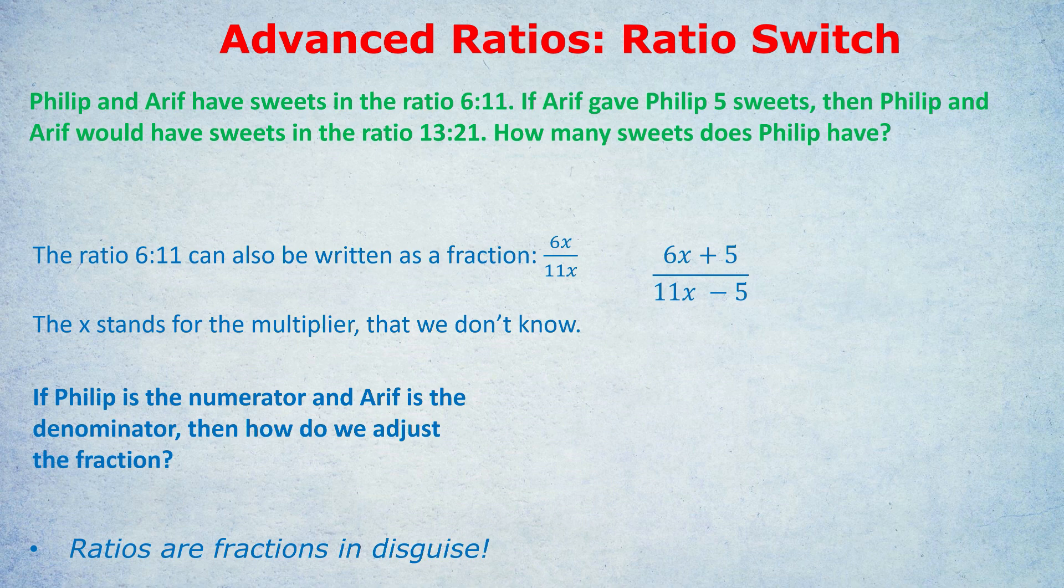We do it like this. We add 5 to the numerator, which is Philip, take away 5 to the denominator, which is Arif. This reflects the fact that Philip gained 5 sweets and Arif lost 5 sweets. So we write the fraction in a slightly changed way now. You could do this on a new line on your page. So far, hopefully it's making sense. I think I've sold you on the 6x over 11x thing, because we've changed the ratio into a fraction, and x stands for the multiplier that we don't know and we're trying to work out. And it makes sense that if Philip is the top line, and he gains 5 sweets, we add 5. And if Arif is the bottom line, he loses 5 sweets, so he takes away 5 in the denominator.